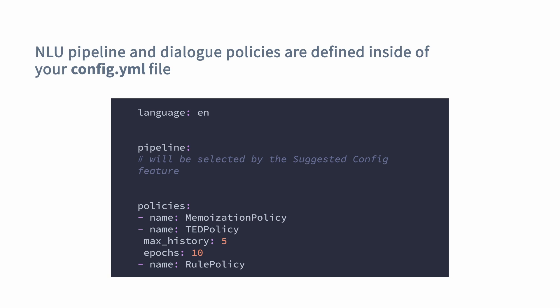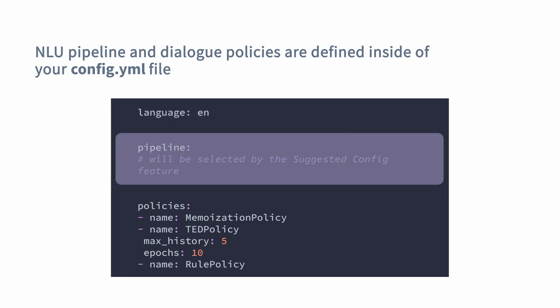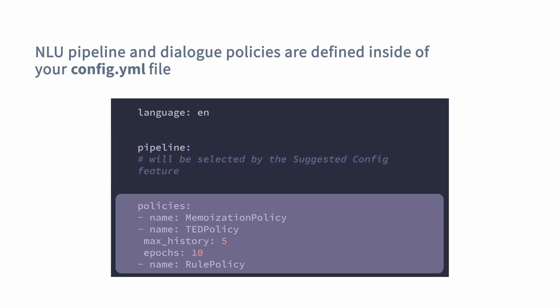The config.yaml file consists of three main parts. First, Language — this parameter defines in which spoken language you will be developing your assistant. Second, Pipeline — this part of the configuration is very important and will be used to define the NLU training pipeline, which defines the steps used to detect intents and entities. Third, Policies — another very important part of the config.yaml file. Policies define the dialogue management techniques and models that your assistant will use to decide how to respond to user inputs.